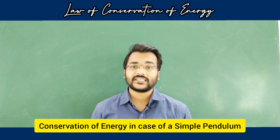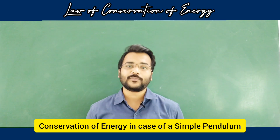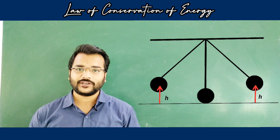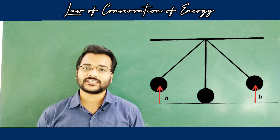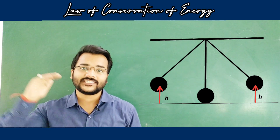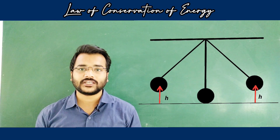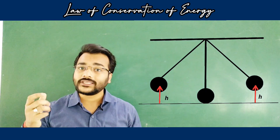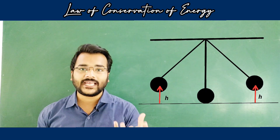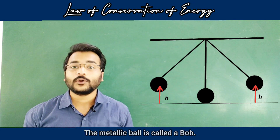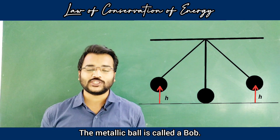Today we will be studying conservation of energy in the case of a simple pendulum. This is the diagram of a simple pendulum. The pendulum is attached with a rigid support — this is just to restrict vertical movement. The second component is a thread, with the help of which we attach a metallic ball. This metallic ball is called the bob. So this is the construction of a simple pendulum.